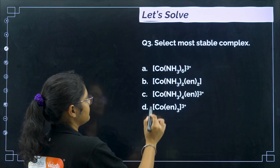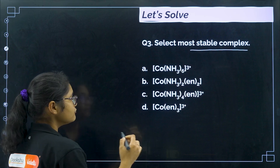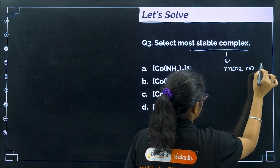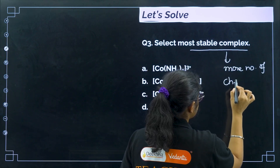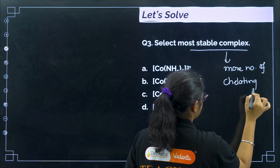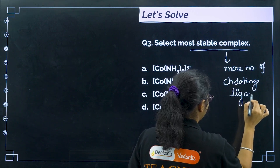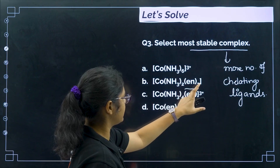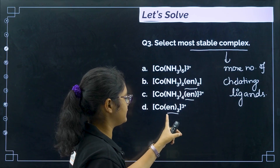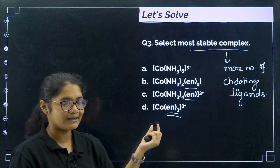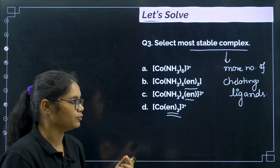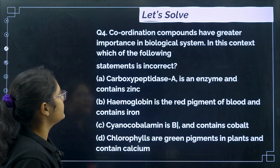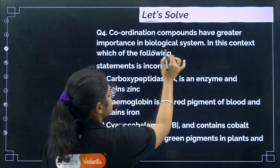Select the most stable complex: for greater stability, we need more chelating ligands, which form cyclic rings. Option A has no chelating ligand, option C has one, option B has two, and option D has three chelating ligands. More chelating ligands means more stability, so the correct answer is option D.